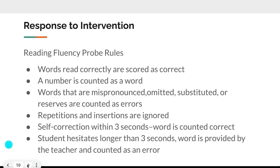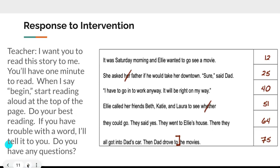For reading fluency probes, words read correctly are scored as correct, and a number counts as a word. Words that are mispronounced, omitted, substituted, or reversed are counted as errors. Repetitions and insertions are ignored. If a student self-corrects within three seconds, the word is counted as correct. If a student hesitates longer than three seconds, the teacher provides the word and it counts as an error. The teacher's directions would be: 'I want you to read the story for me. You'll have one minute to read. When I say begin, start reading aloud at the top of the page.'